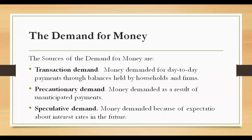There are three sources of demand for money. First is transaction demand: money demanded for day-to-day payments through balances held by households and firms instead of stocks, bonds, or other assets. This kind of demand varies with GDP and does not depend on the rate of interest.